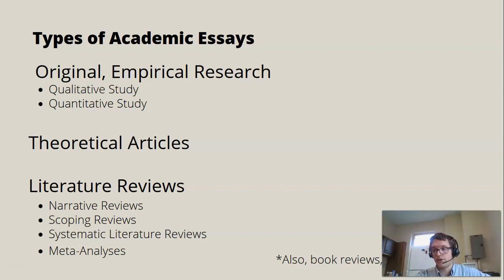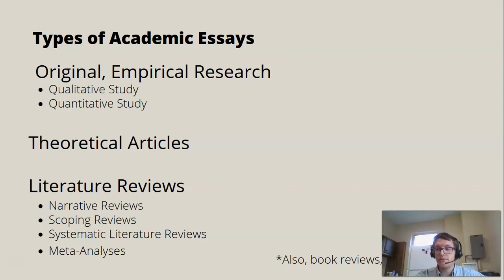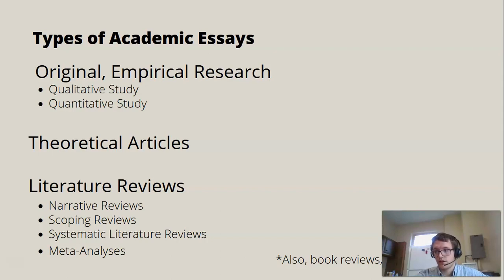And finally, you'll have literature reviews, which review the state of research on a given topic in different levels of detail. Journals also publish book reviews, letters to the editor, and editorials, but these are less important to you. Sometimes a book review might be useful to determine the value of a potential source, but in general, empirical research, theoretical articles, and literature reviews are the three kinds of things published in academic journals which you'll use to support your research.